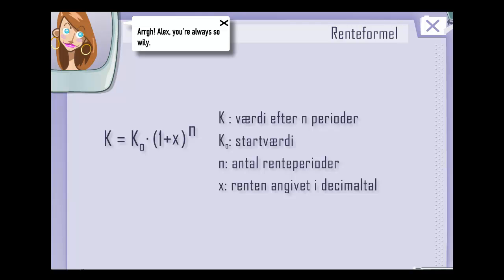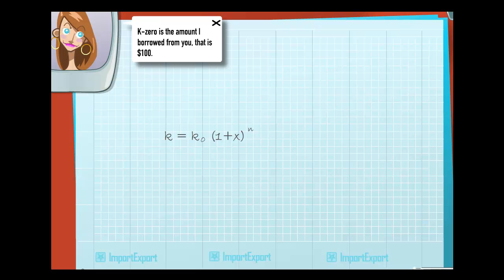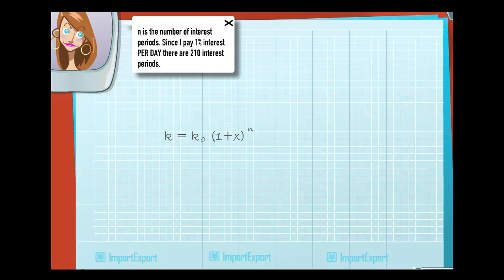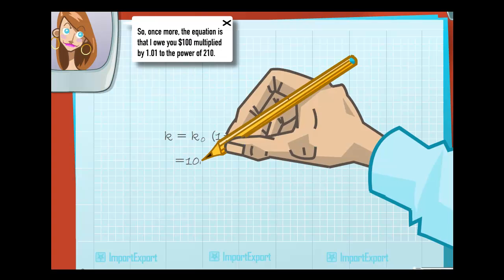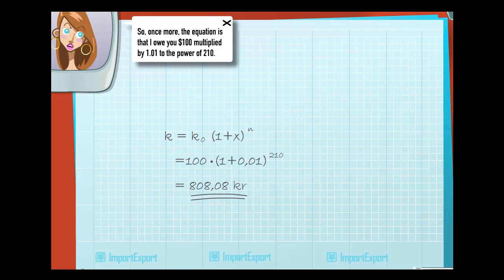Alex, you're always so wily! So, k equals k₀ times 1 plus x to the power of n. k₀ is the amount I borrowed from you, that is, $100. I multiply this with 1 plus x to the power of n. n is the number of interest periods. Since I pay 1% interest per day, there are 210 interest periods. For every interest period, I pay an interest of 1%, so x is 0.01. That's 1% in decimal form. So, once more, the equation is that I owe you $100 multiplied by 1.01 to the power of 210.